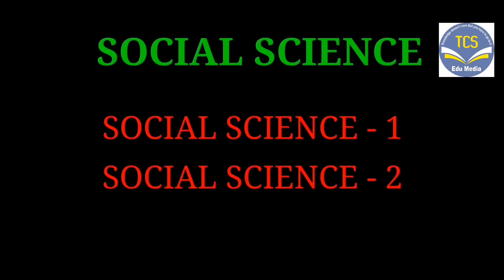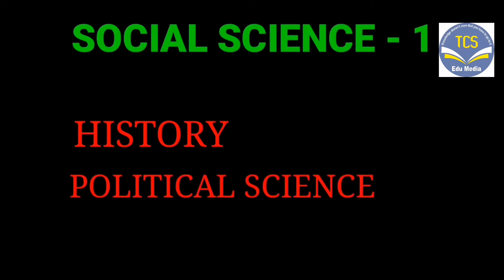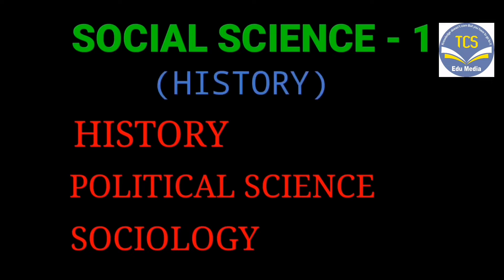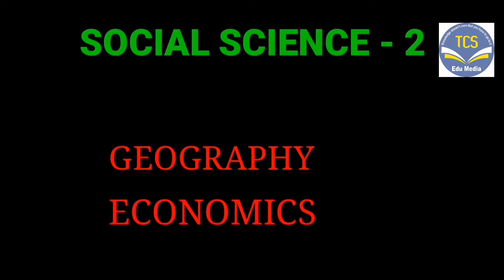Social Science 1 consists of 11 chapters regarding History, Political Science, and Sociology, but it is generally known as History. Similarly, Social Science 2 consists of 10 chapters regarding Geography and Economics, but it is generally known as Geography.